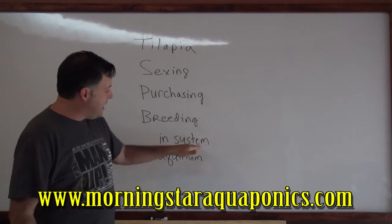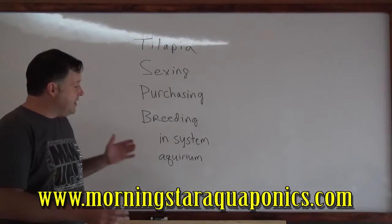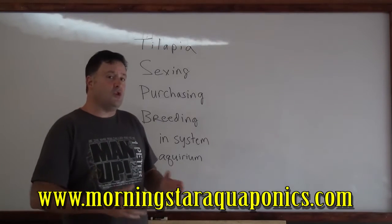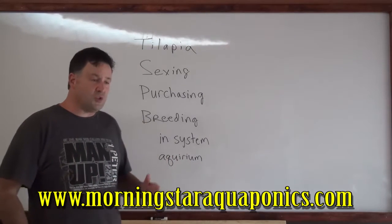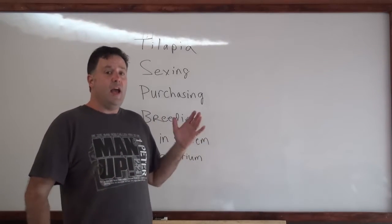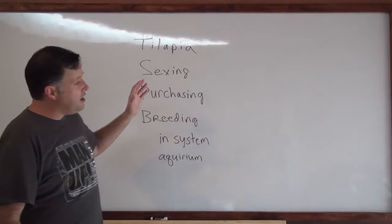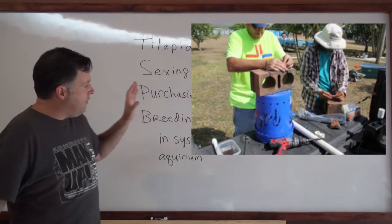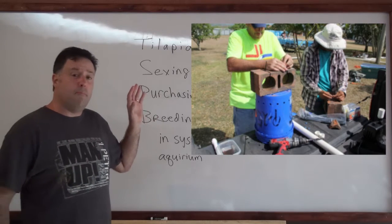As far as in the system, you want a ratio of males and females, and the ratio is about three females to one male or five females to one male. That's the ratio you want in your aquaponic system. I'm going to put up a picture here. You can see this is called a fry bucket. What we do is it's a five gallon bucket, we drill several holes around the bucket, about half inch holes.